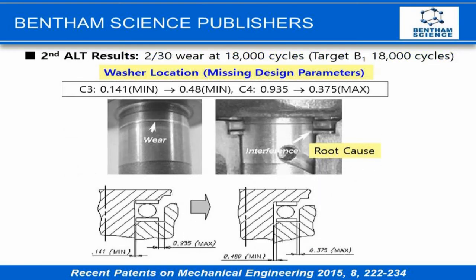In the second ALT, we found two failure samples at 80,000 cycles. The root cause was interference between the wash and crankshaft. We modified the slush wash dimension. We found that Parameter ALT is very effective for the starting machine when applied in the design phase. Thanks.